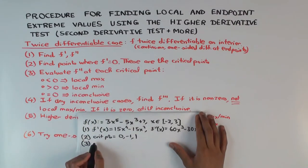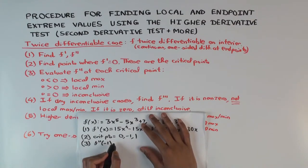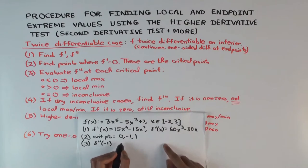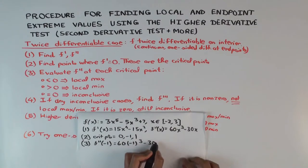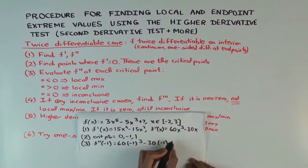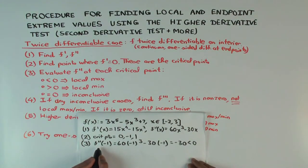Let's figure out the sign of f double prime at each critical point. At negative one: f''(-1) = 60(-1)³ minus 30(-1) = -60 + 30 = -30, which is negative, less than zero. So by the second derivative test, we get a local maximum at x = -1.